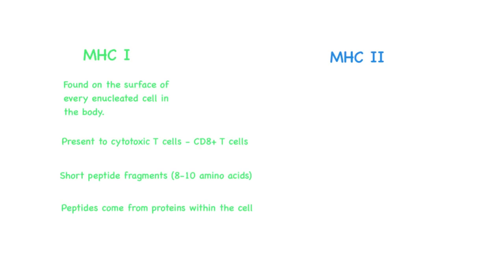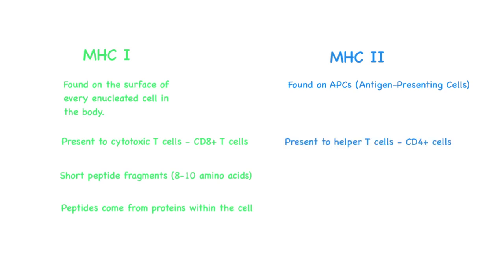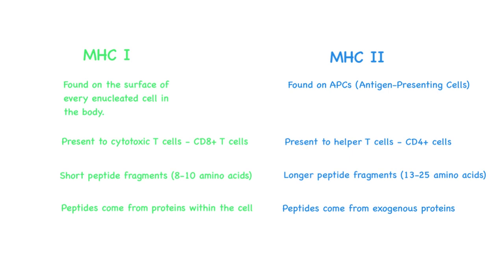MHC 2 molecules are found primarily on specialized antigen-presenting cells, or APCs, such as macrophages, dendritic cells, B cells, as well as some activated T cells. MHC 2 molecules present their antigens to helper T cells, also referred to as CD4 positive T cells. They present slightly longer peptide fragments than MHC 1 molecules, typically ranging from 13 to 25 amino acids. Rather than coming from proteins within the cell, MHC 2 molecules present exogenous proteins — antigens that have been engulfed, processed, and degraded within the antigen-presenting cell. This process is known as antigen presentation.